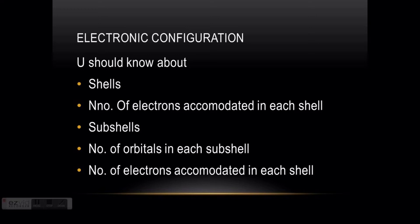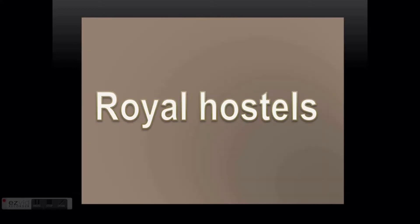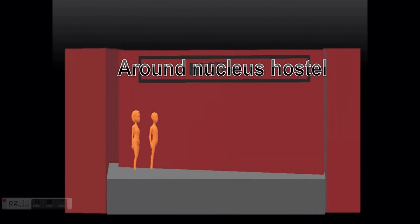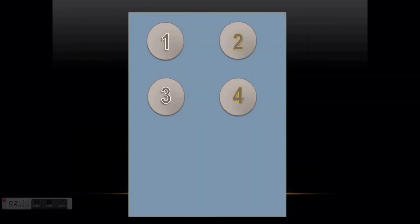I am going to give you a brief explanation about electronic configuration using an associative learning method so you can understand better and never forget it. Our electron is going to join a royal hostel — it already chose its hostel, which is around the nucleus. The hostel has four floors, and in this hostel the floors are named K, L, M, N.